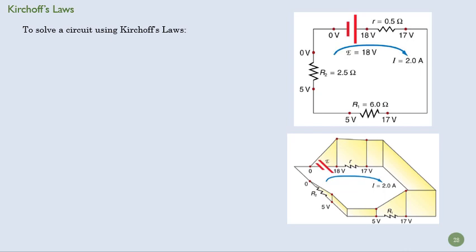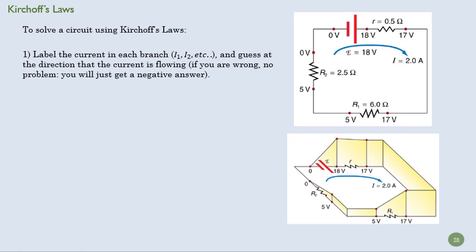Conceptually, they're not terribly difficult, but the actual doing is the hardest part here. First of all, you have to label the current in each branch and guess where it's going. In this circuit, that's relatively easy. We know it's going that way. But it doesn't matter if you guess wrong. You're going to get a negative current if you guess wrong, and that just means the current's actually going in the other direction. But it doesn't hurt the math in the problem.